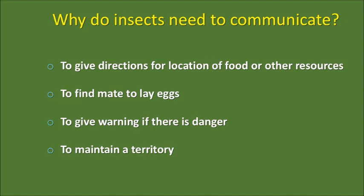Another very typical thing about insects — which we humans don't do so prominently — is to mark a territory. Certain insects stay in a certain region and won't allow other insects of their kind to come in. We have seen this in dogs: if another dog comes into the neighborhood, the resident dog keeps barking and chases it out. This is also very prevalent in insects.